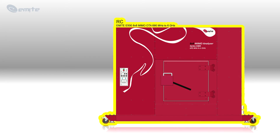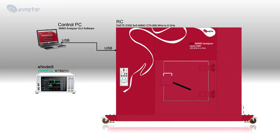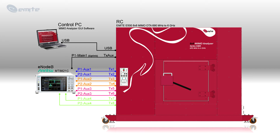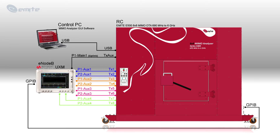For LTE carrier aggregation OTA testing, we will use our E500 medium-sized reverberation chamber, with a control PC running our intuitive MIMO Analyzer graphical user interface software. The computer is connected to the chamber by a USB cable. An Anritsu MT8821C eNodeB emulator will be used as an example and connected to the E500 front panel using RF cables for the first, second, third, and fourth carrier components and for the uplink communication. The Anritsu box can be controlled through either an Ethernet connection to the control PC or a GPIB connection to the back panel of the chamber.